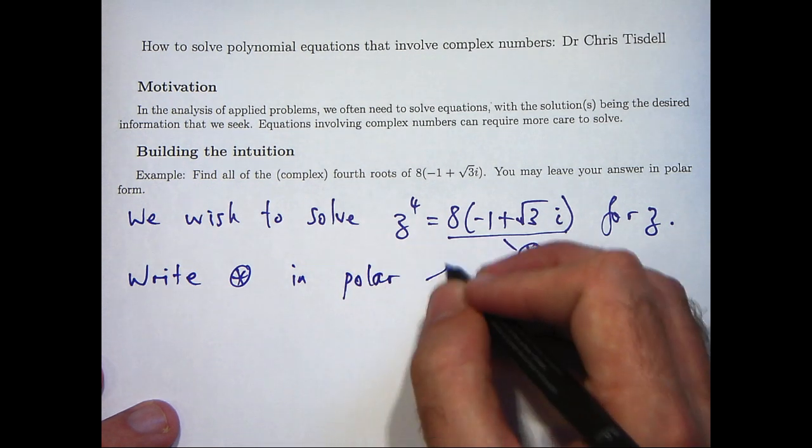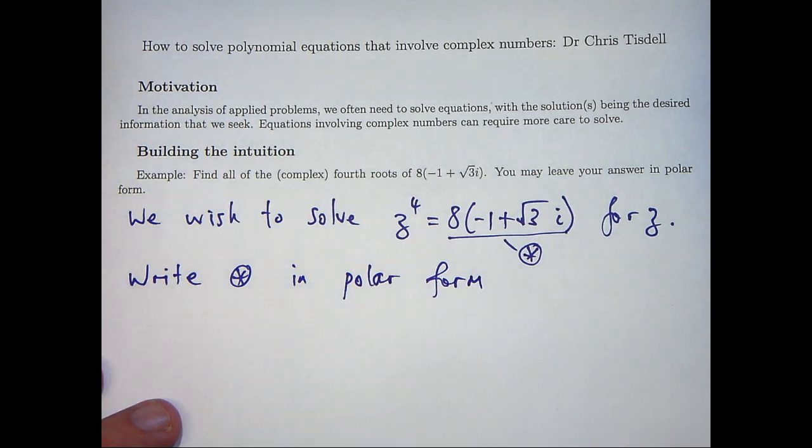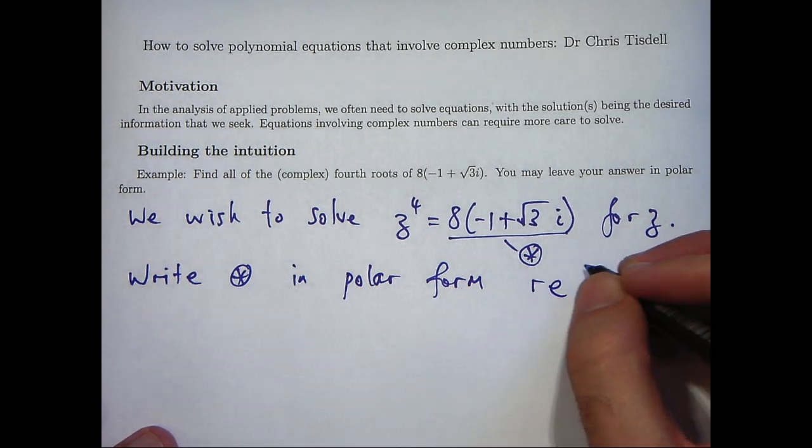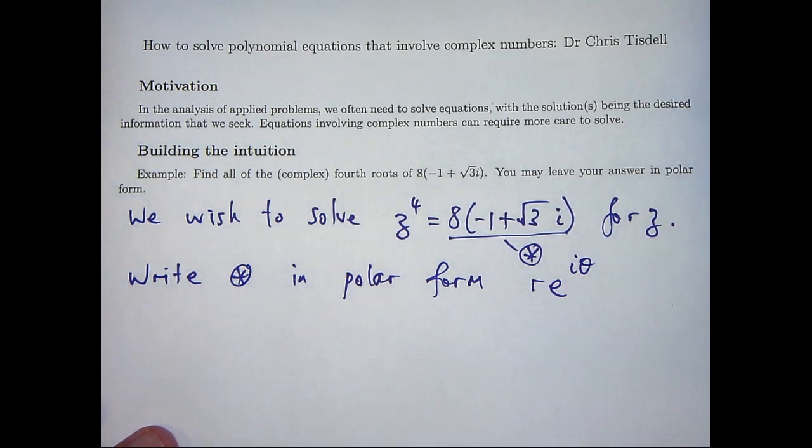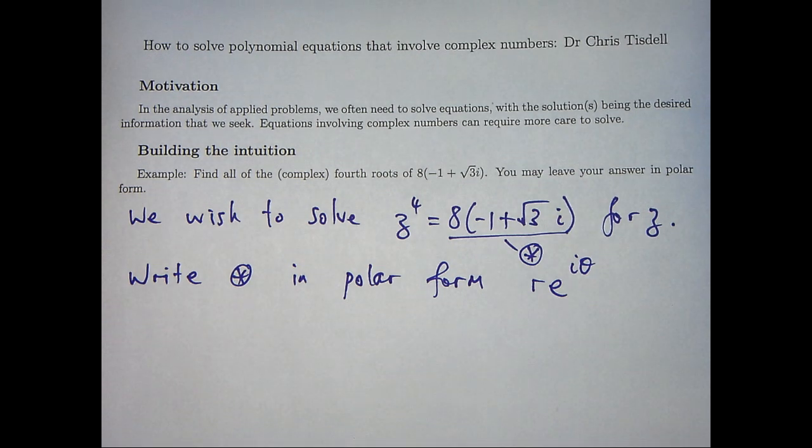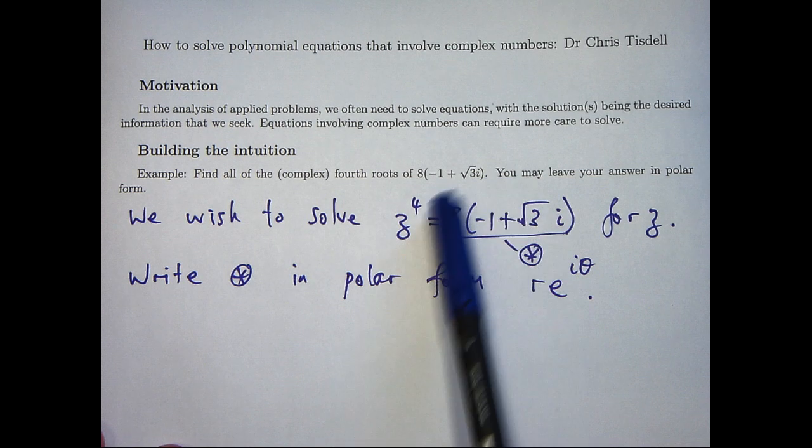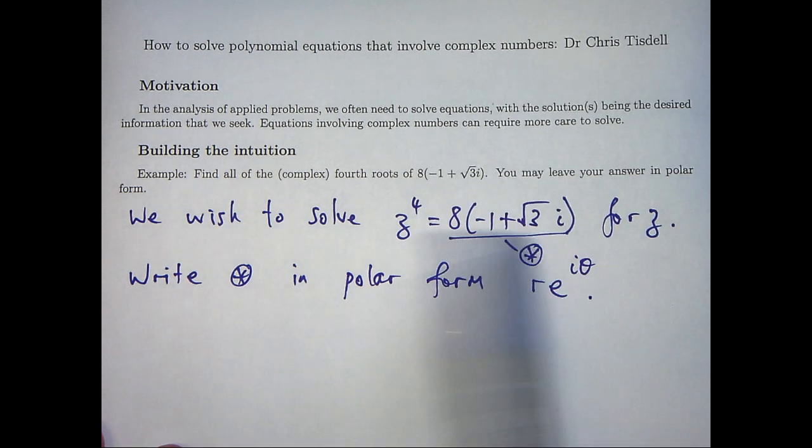Now polar form of a complex number involves a length r to the origin and an angle theta, where theta is the angle to the positive real axis. So we would like to calculate a specific r and a theta for this right-hand side.